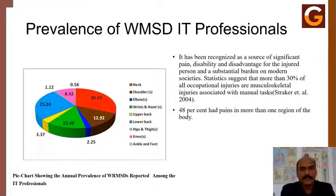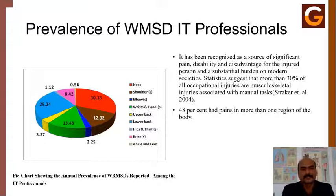A survey conducted on the prevalence of work-related musculoskeletal disorders in IT professionals found that the majority of injuries happen to the neck, which occupies almost 30%, followed by lower back pain, which is also very common.